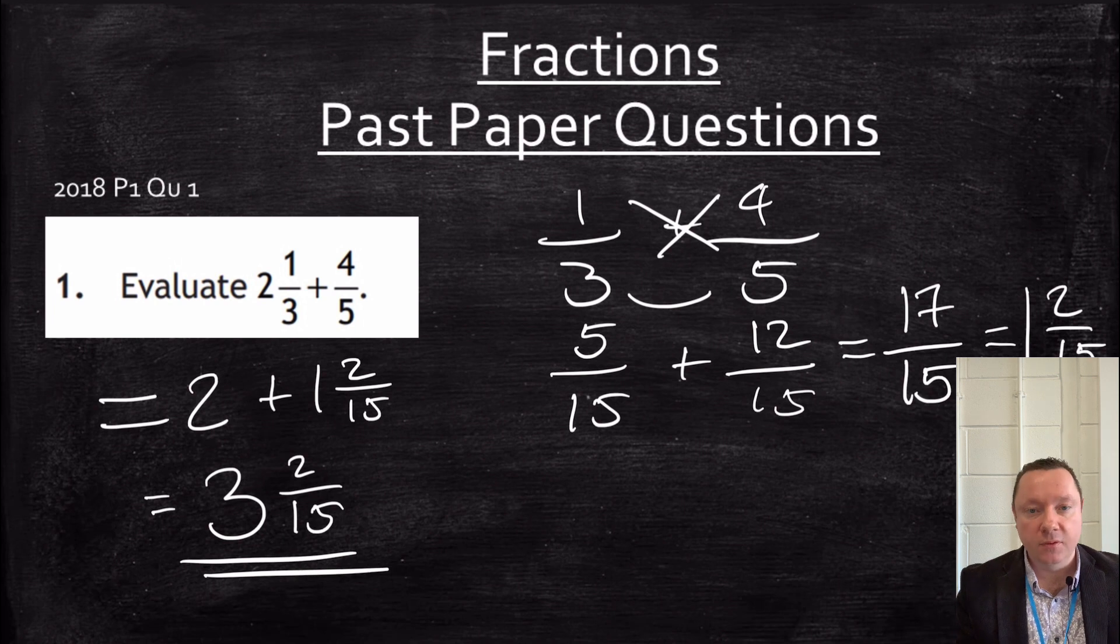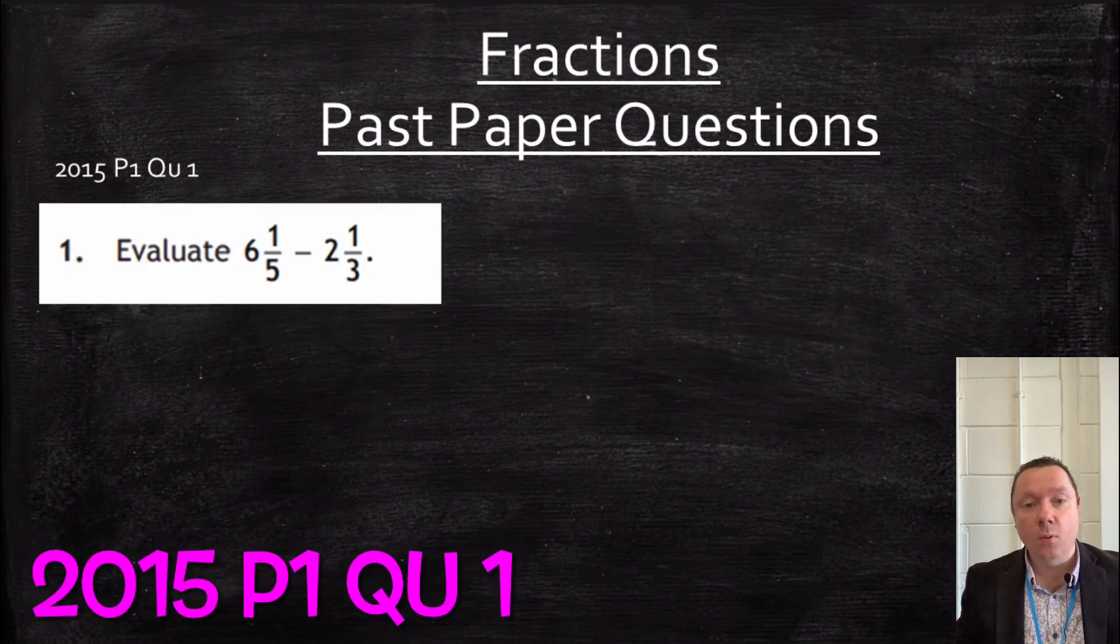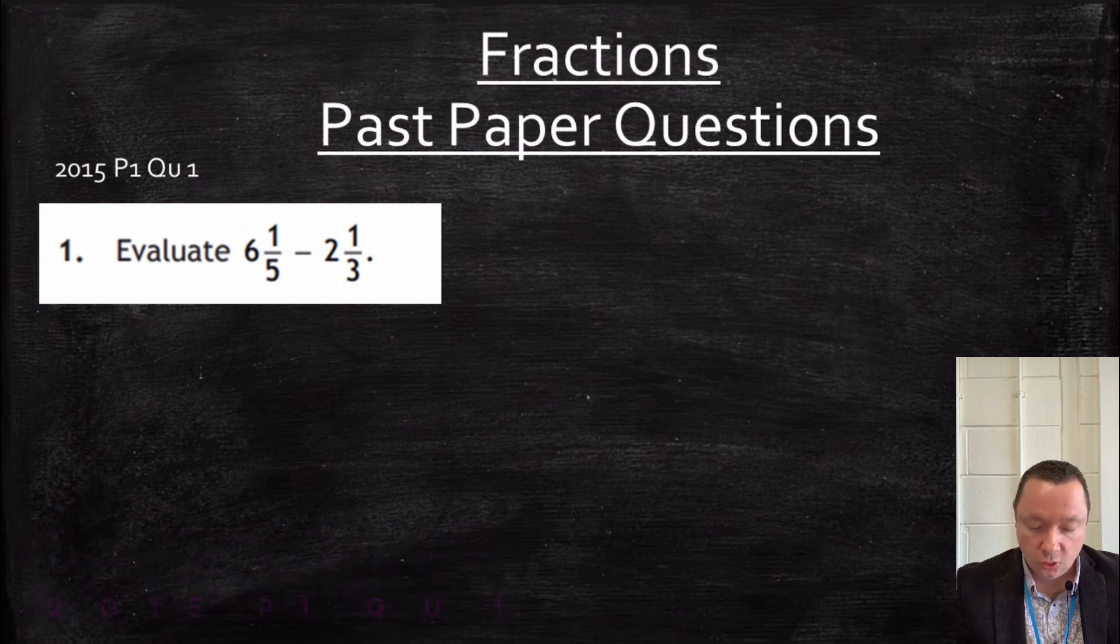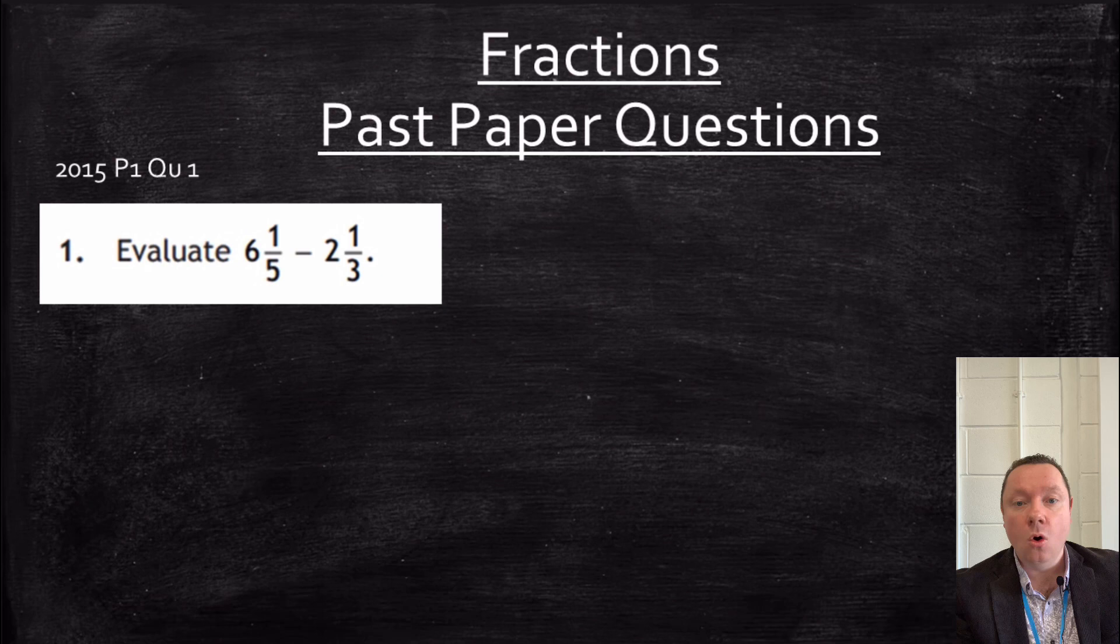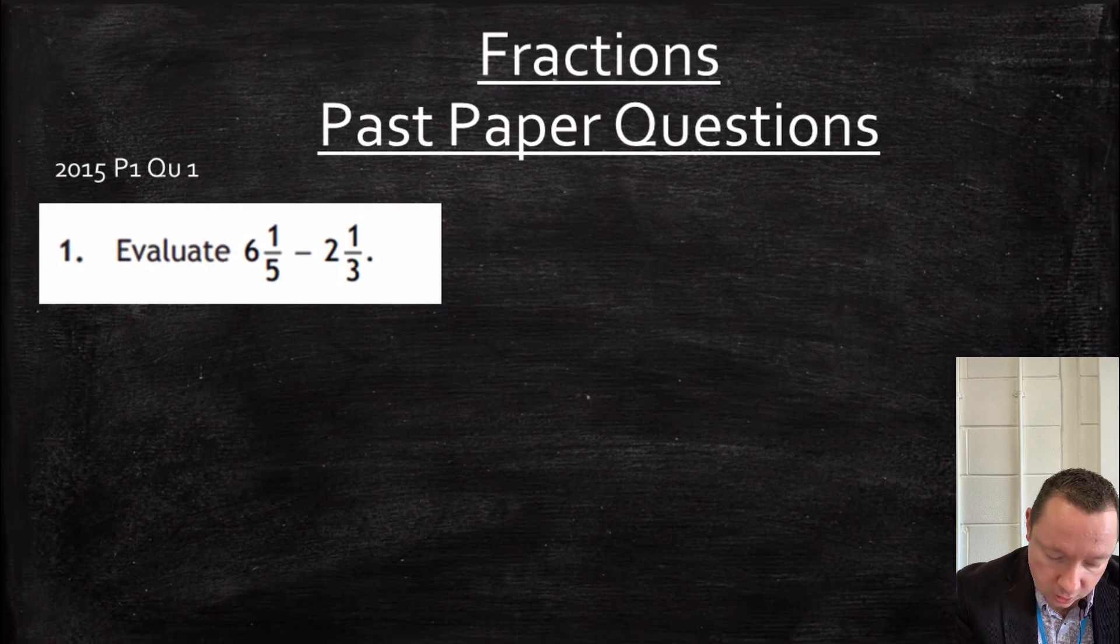Okay, 2015, paper 1, question 1 again. So non-calculator, 6 and a fifth minus 2 and a third. So the first thing I'll do is I'll deal with the whole number parts. So I do 6 take away 2 and I get 4.